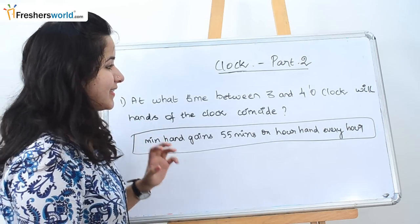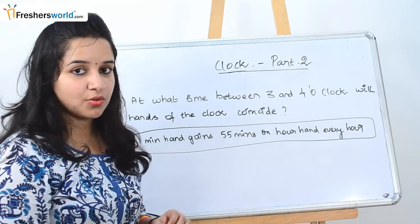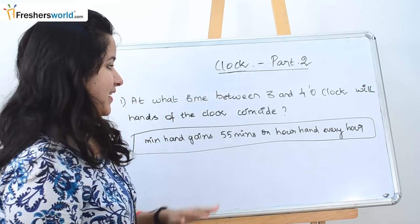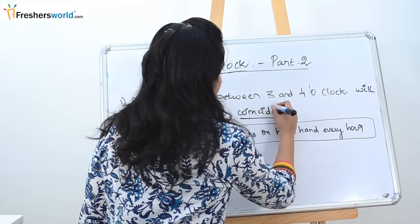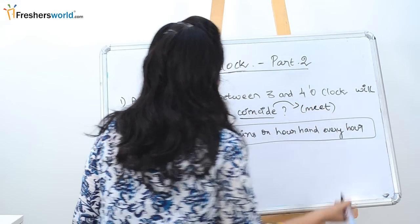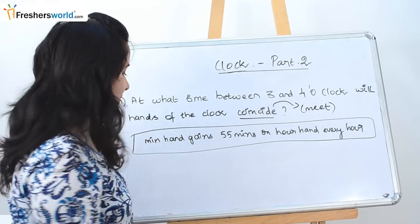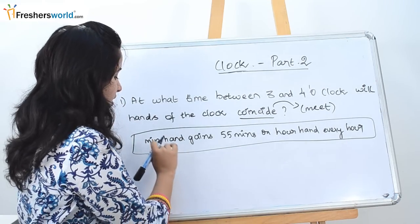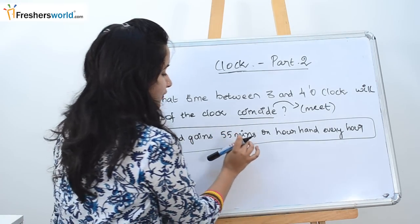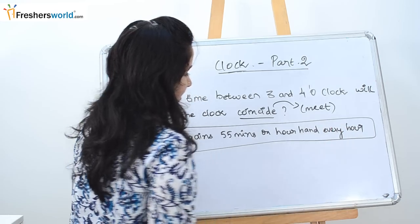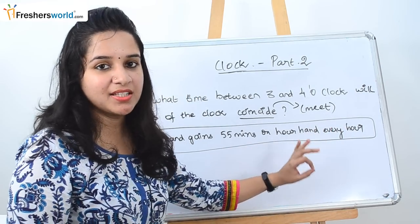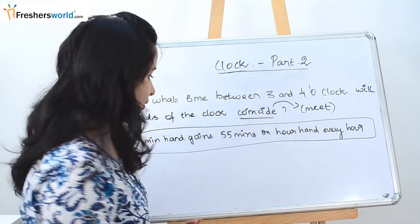The first question is: at what time between 3 o'clock and 4 o'clock will the hands of the clock coincide? Coincide means when they will meet — that's what they are asking. One basic thing you should remember is that the minute hand gains 55 minutes on the hour hand every hour. If you know this concept, it will be very easy to solve the problem.